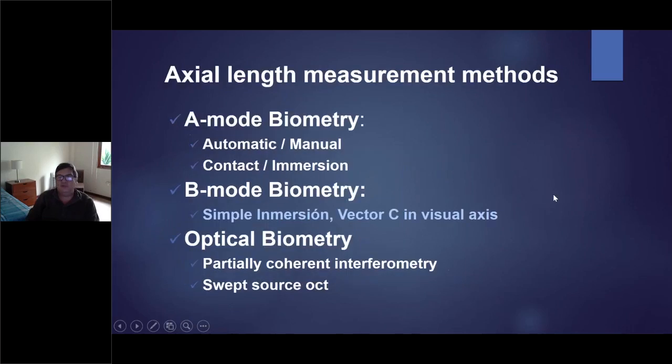There are different methods to make the biometry. A-mode biometry - you can do automatic, manual, contact, or immersion. I recommend immersion, always. And you can do B-mode biometry. Not everyone makes this very easy. If you can use B-mode for examination, you can use it very easily for biometry. If you have your B diagnostic method, it's very easy to combine in the biometry.